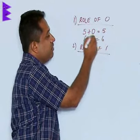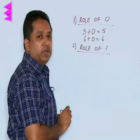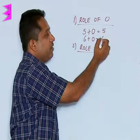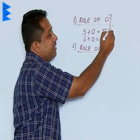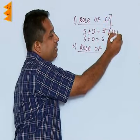So what happens is that when we add 0 to any number, we get the number back. Therefore, 0 is called an additive identity.